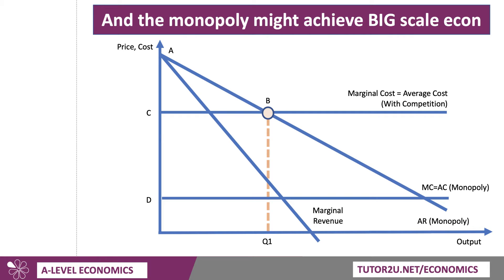So what might happen is this: the unit cost of production, the marginal cost of production, might fall dramatically from C to D. Notice this is an assumption here that the monopolist is better placed, better able to achieve big economies of scale. Now, in this situation, you get a little bit of a surprising result. A profit-maximising monopoly will produce at output Q2, where marginal cost meets marginal revenue. Draw up to the demand curve and then draw across, and you get the price E.